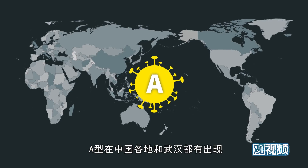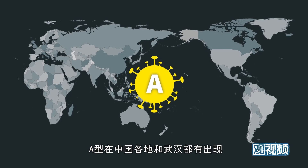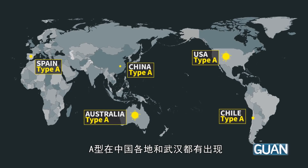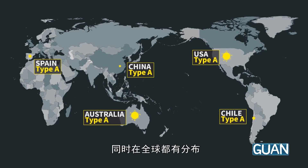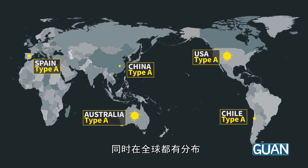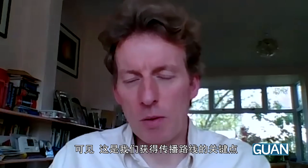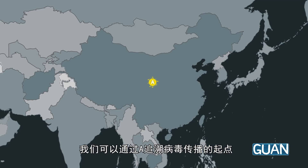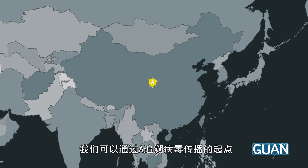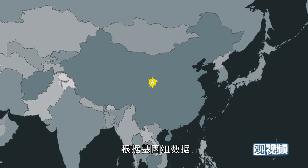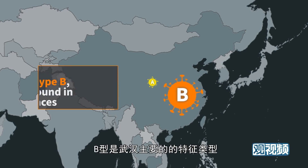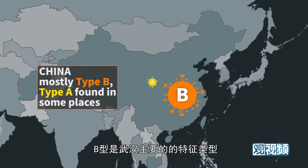The geography is interesting. The A type has representatives in China and Wuhan, but also internationally. We know how it started — with an A genome, not with the predominant type in Wuhan, which is the B genome.